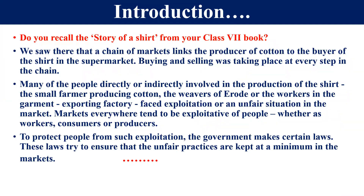Buying and selling — these two things were taking place at every step in the chain. First of all, there was a raw material; the producer purchased that raw material. After that, the factory owner processed the raw material and produced the shirt. Then the wholesaler purchased that shirt from the producer, bringing it into the market. Then retailers and other supermarket sellers purchased the shirt from the wholesaler, and finally we purchase the shirt. This is the story of a shirt we studied in 7th standard.